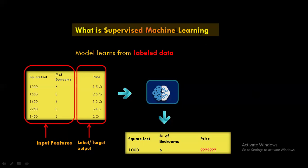Once you train your model with the input and output feature, your model becomes prediction ready. Now, if you apply this model on any new housing dataset which contains the square feet and number of bedrooms — for example, a house with thousands of square feet and six bedrooms — this model will make a prediction for the housing price based on the pattern it learned from the past data.